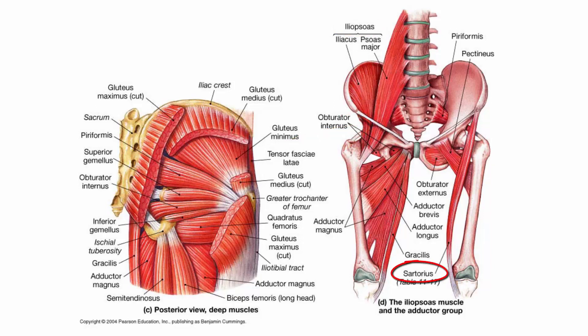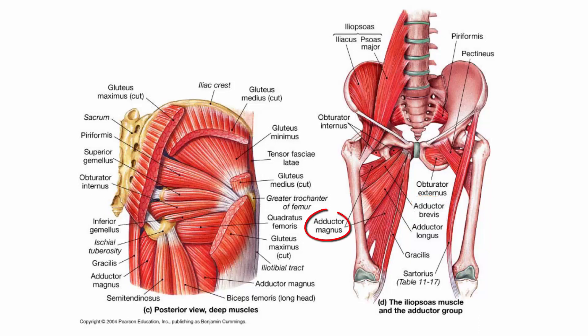Here's the sartorius muscle, which flexes and rotates laterally the thigh and the leg — it's the muscle that helps you cross your leg. Down here, we have the thigh adductors: the adductor longus, which adducts the thigh; the pectineus muscle, which also adducts the thigh; the adductor brevis, again an adductor of the thigh; and the adductor magnus, which is a pretty big muscle. If we dissect away the adductor brevis and adductor longus, we see that the adductor magnus is very large and also adducts the thigh.